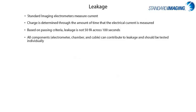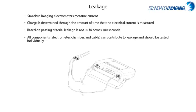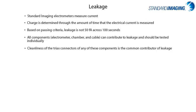When determining leakage, all components must be tested. With the dust cap secured to the triaxial connectors of the electrometer, a 100-second leakage measurement in picoamps should be determined with 300 volts bias applied. Once within acceptable range, the triaxial cable should be connected and another 100-second measurement repeated. Once cable leakage is determined, the chamber itself can be connected and leakage assessed again. A common contributor to leakage is the cleanliness of triaxial connectors — even microscopic dust can cause large leakage. Using compressed air to clean the triaxial connectors can resolve this.